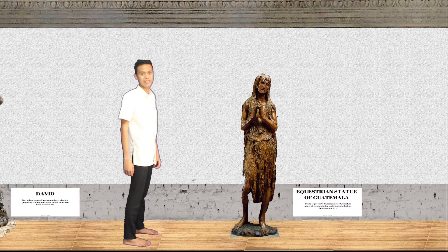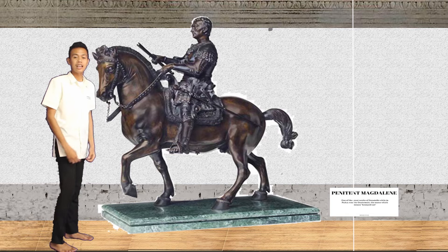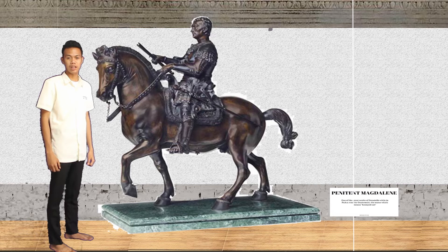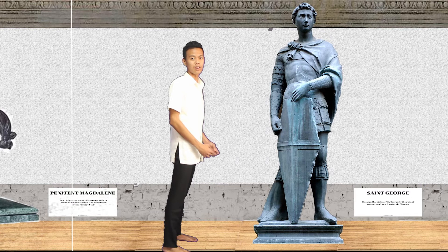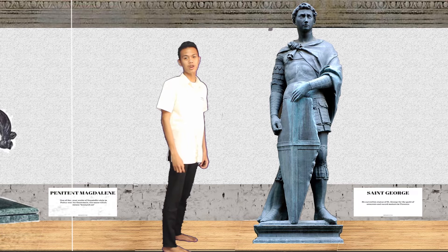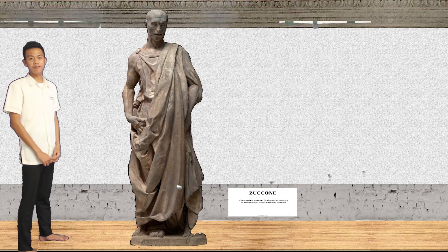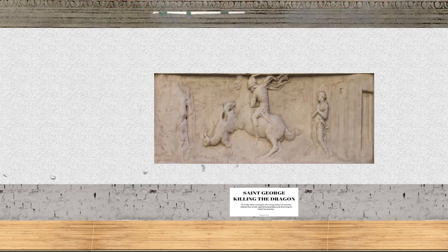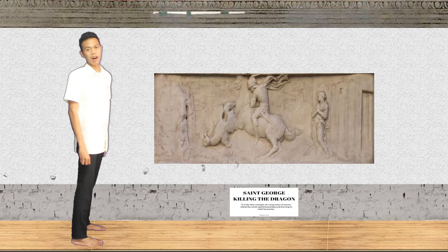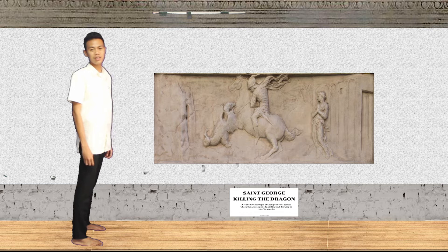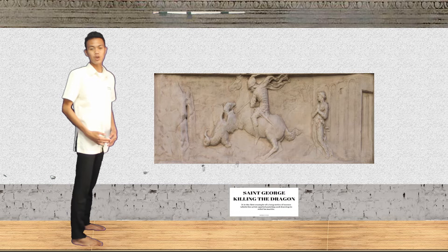Our next statue is the Penitent Magdalene. It is made out of marble and was probably commissioned for the Baptistery of Florence. Our next statue is St. George, a marble statue carved for the guild of armorers and sword makers in Florence. Our next statue is Zucone, a marble statue commissioned for the bell tower of the cathedral in Florence, Italy. And our next statue is St. George Killing the Dragon, a marble relief and one of the first examples of a long series of scenes in which the artist used painting and drawing in a marble relief.